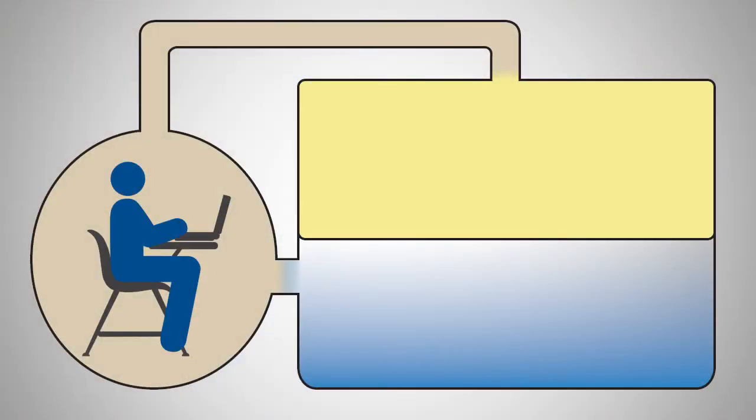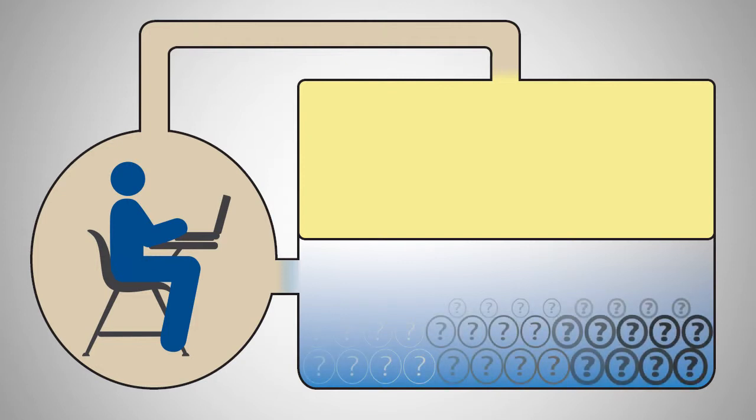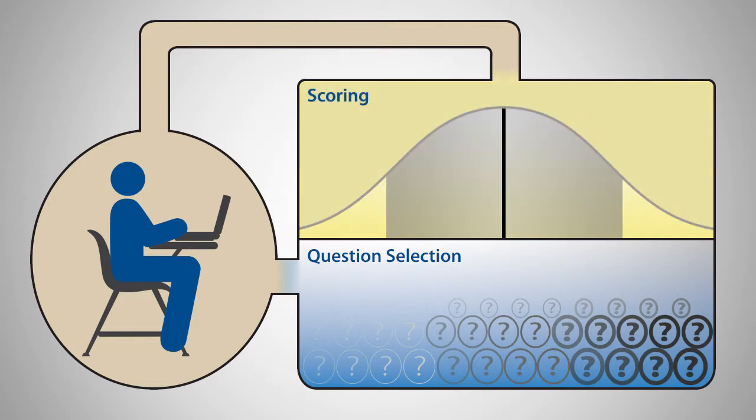In order to provide the most appropriate questions to students, the CAT follows two key steps: question selection and scoring. The steps repeat each time a question is presented and answered.